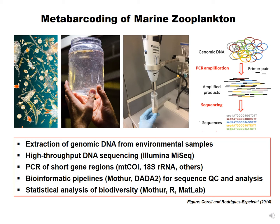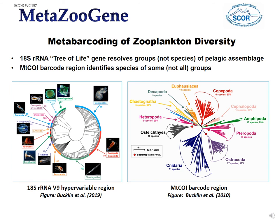For those who may not be familiar with the term metabarcoding: it's barcoding of environmental samples, made possible by high-throughput DNA sequencing. The regions that we can sequence are still short, but many different gene regions are used — the barcode CO1 region, the 18S tree of life region — along with many different bioinformatics pipelines and statistical analysis approaches. That's why one of our challenges is best practices. Metabarcoding of zooplankton diversity is really complicated by the fact that the zooplankton assemblage itself is so diverse, phylogenetically and systematically complex.